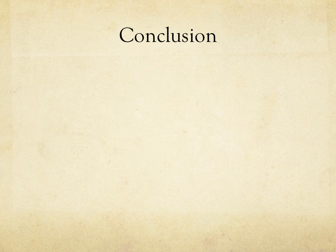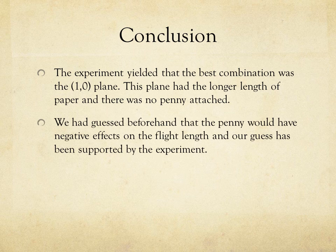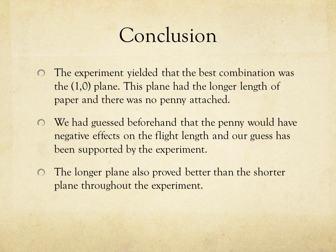Our experiment yielded that the best combination was the (1,0) plane. This plane had the longer length of 11 inches and there was no penny attached to it. We guessed beforehand that the penny would have negative effects on the flight length because it would weigh down the plane. Our guess was supported through this experiment, as the planes with the penny were far less in flight distance. The longer plane also proved better throughout the experiment than the shorter planes.